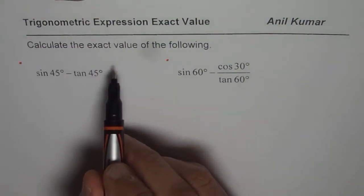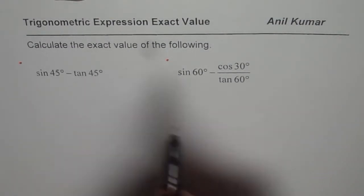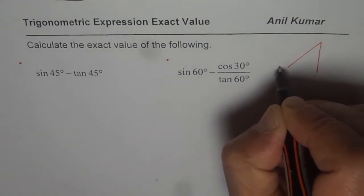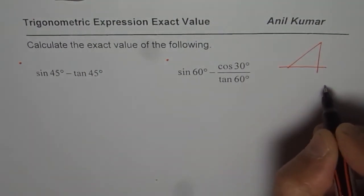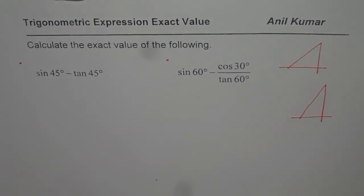Now whenever you want to write an expression with exact value you should consider the special triangles. Let me sketch these special triangles for you. So first one I have sketched is the 45 degrees one and now let me sketch another one which is 30, 60, 90 degrees.